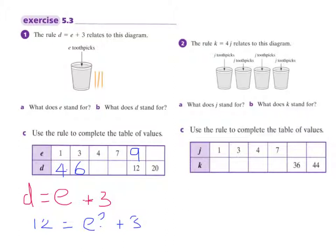If we look at question 2, this time the rule is K equals 4J. So if we think about it, there's J toothpicks, J toothpicks, J toothpicks, and J toothpicks — so we've got 4J. What does J stand for? The number of toothpicks in each jar. And obviously if that's got 5, that's got 5, that's got 5 — it's going to be exactly the same in each one. What does K stand for? K equals all of this, so K is the total number of toothpicks.